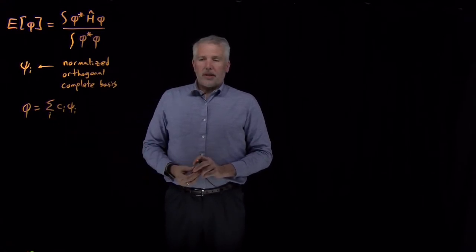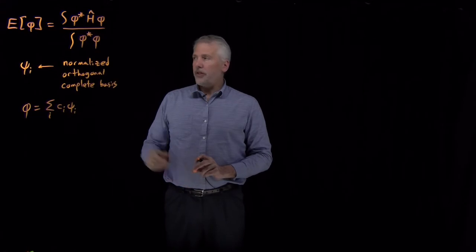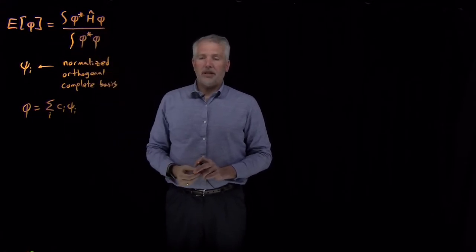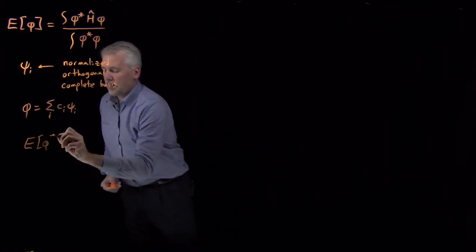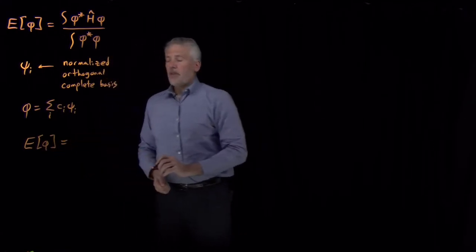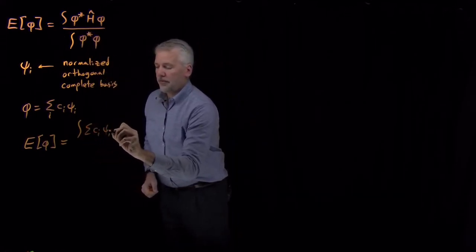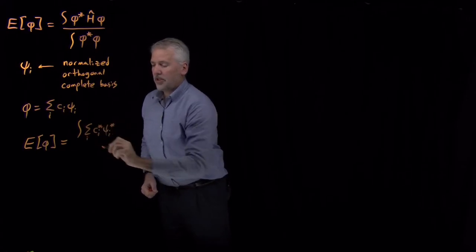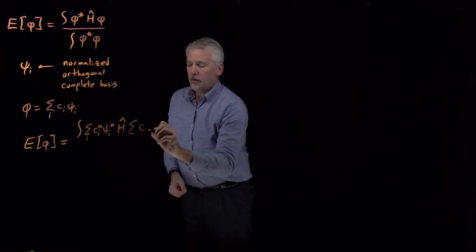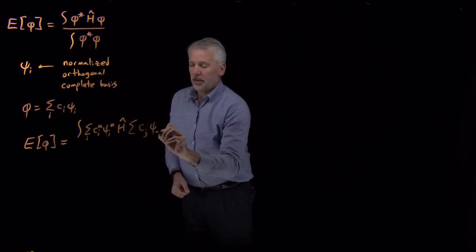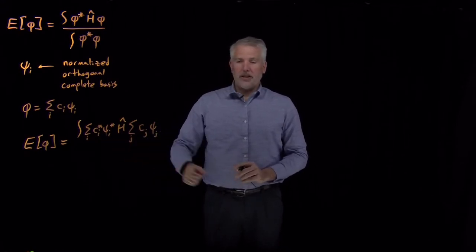This turns out to be a pretty powerful statement, because if we take these trial functions in the variational energy expression — so every time I see a phi, each of the four times I see a phi in this expression — I'm going to replace it with this linear combination of true wave functions. In the numerator, phi star becomes a sum of coefficients times wave functions, each of which is now a complex conjugate. Then the Hamiltonian acts on the trial function again, which is a sum of coefficients times wave functions. I'll use different summation variables to distinguish the sums: i for the first sum and j for the second. In the denominator, it looks very similar, just without the Hamiltonian.